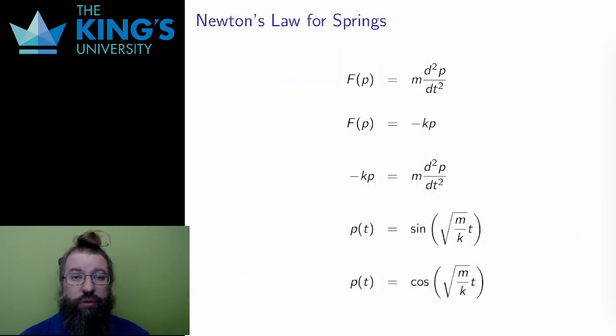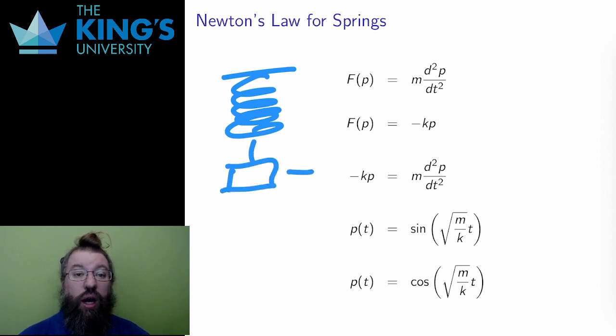So now let me talk about Newton's first law again. I said I'm not going to solve it, but I will demonstrate a particular solution. Let me talk about springs. A spring has an equilibrium state, a position where it is relaxed, where it doesn't pull in either direction. I'll call that position p equals zero.